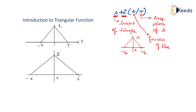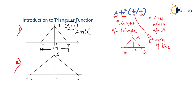Now let us express two sample triangles in terms of a mathematical expression. For the first one, by comparing with the standard function, A is equal to 1. If you see the total width, it is 2T, assuming 0 is the center. So I can write this as A·tri(t/T), and since 2T is the complete width, the half width is T.